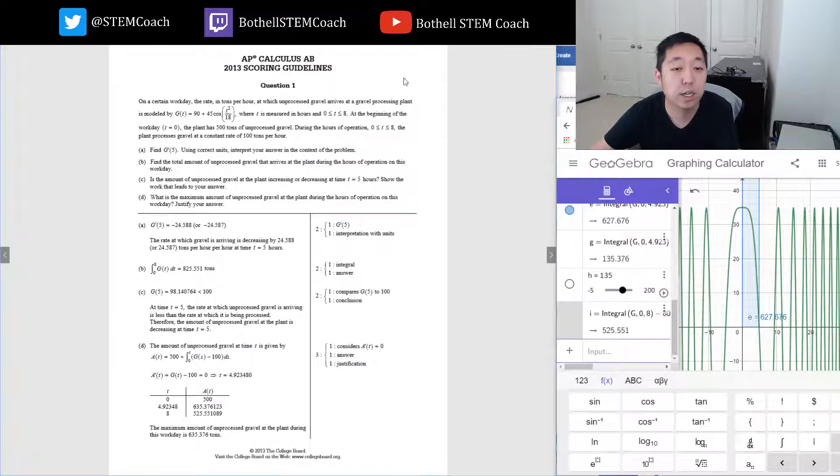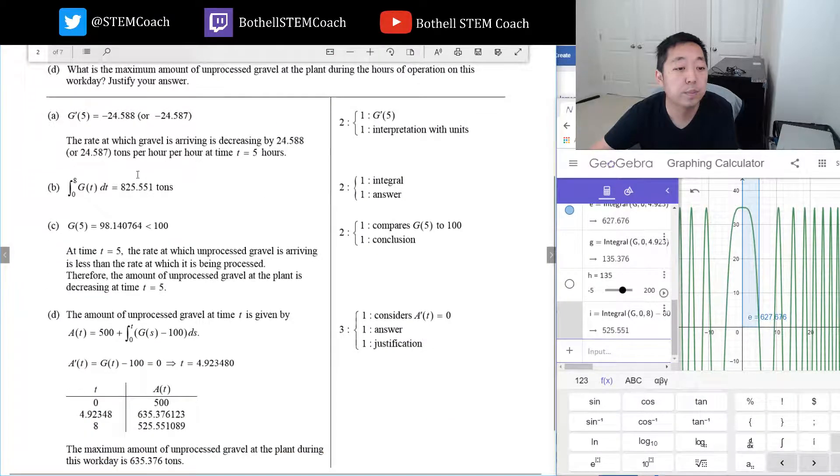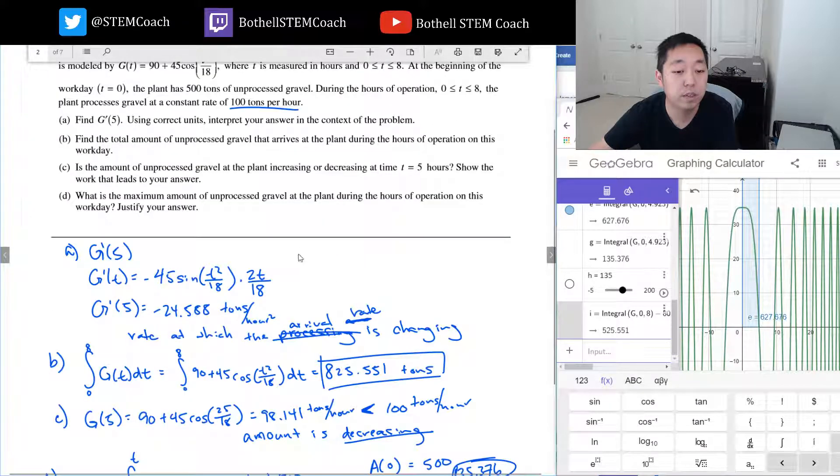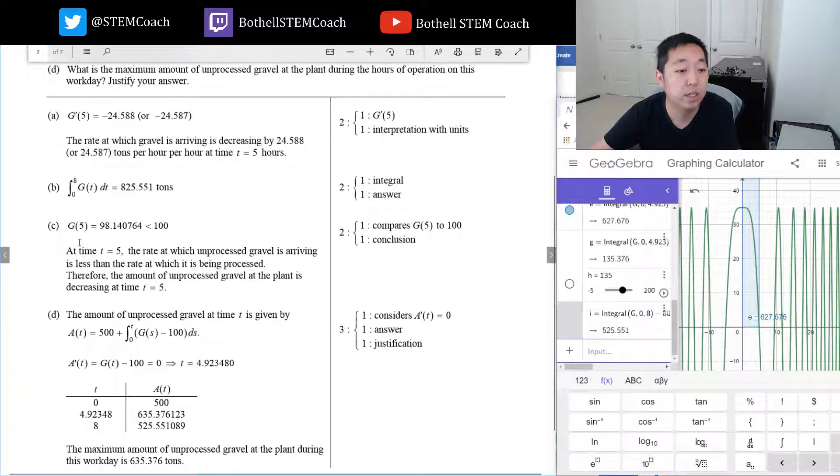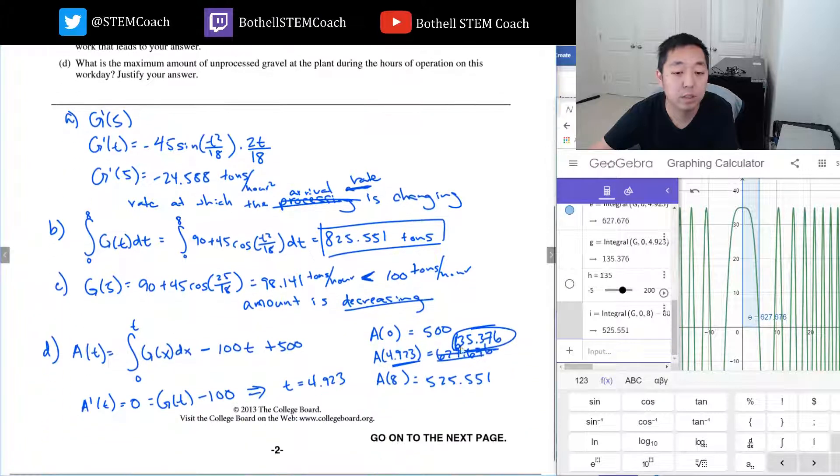Okay, so we finished that one. Let's take a look at the scoring guidelines and let me zoom in on this so we can see this a little better. The rate at which gravel is arriving is decreasing by 24.588, that's right. 825, I got 825, good. The rate is decreasing, that's the key right there, decreasing. And the amount is 500, 635, and 525. So I did 500, 635, and 525. Yep, all right, very good.